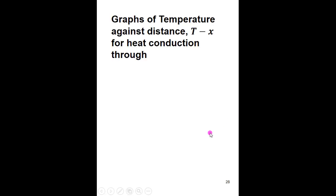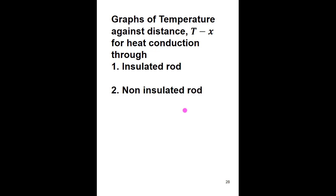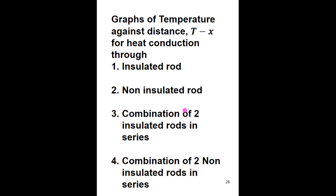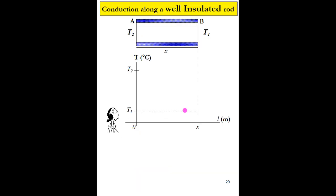We are going to discuss the graph of temperature against distance for heat conduction through: first, an insulated rod; second, a non-insulated rod; third, the combination of two insulated rods in series; and fourth, the combination of two non-insulated rods in series. First, we consider heat conduction along a well-insulated rod.